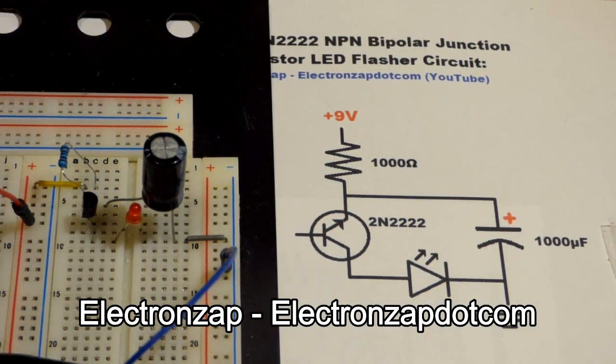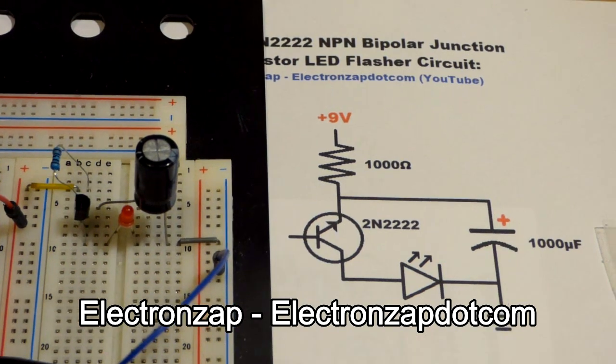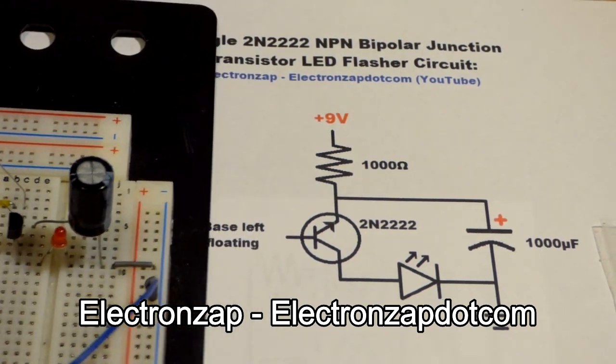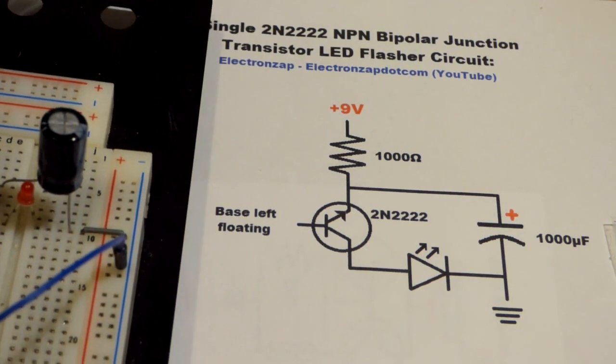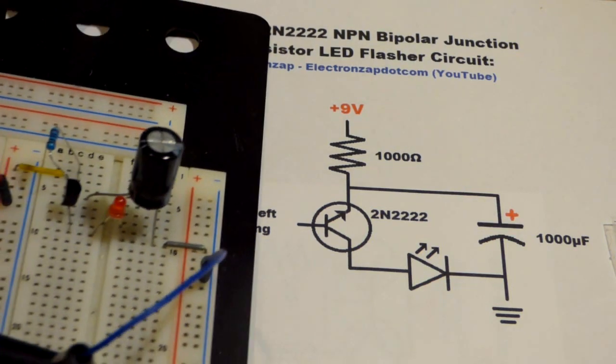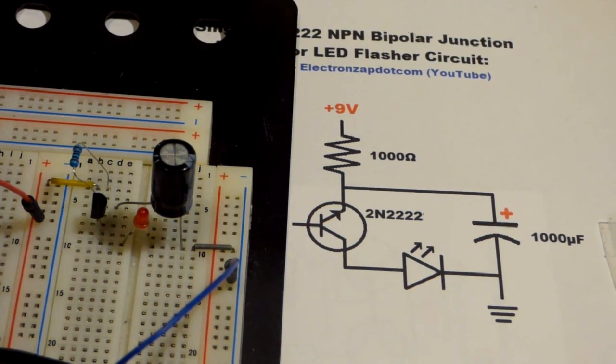Alright, so now in this video we're going to go over an interesting circuit I came across today, and that is flashing an LED with a single 2N2222 NPN bipolar junction transistor. It's a flashing circuit for that, and there's a schematic.